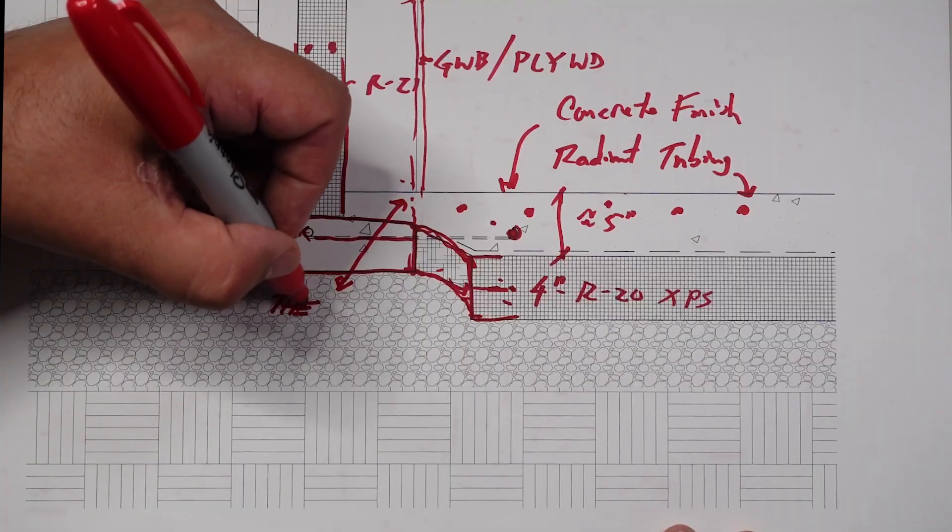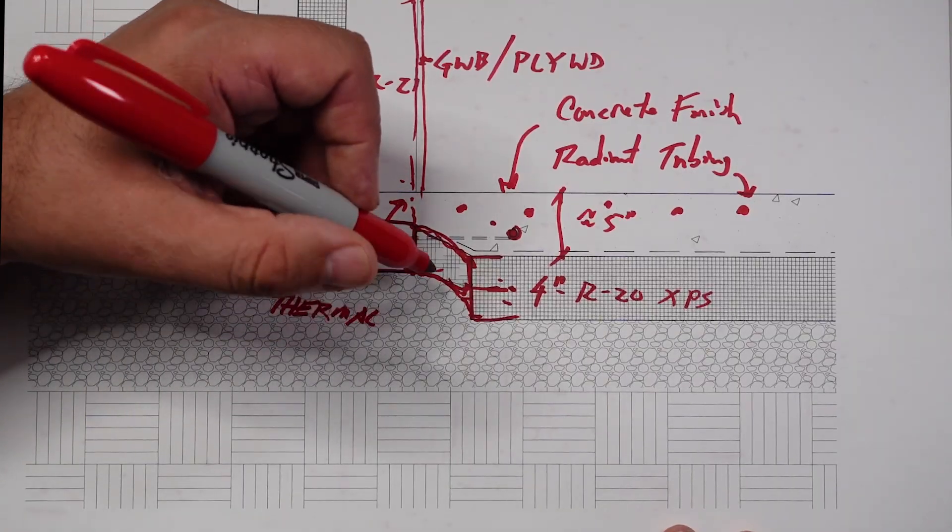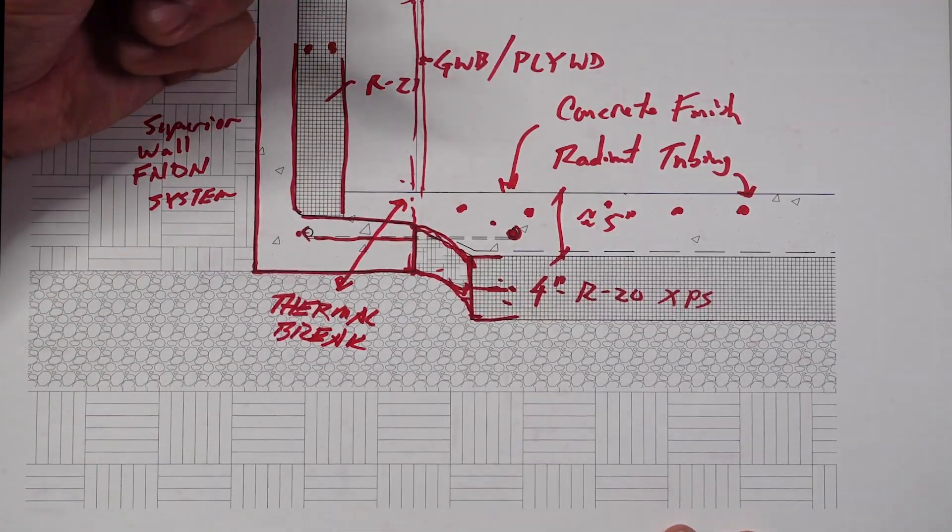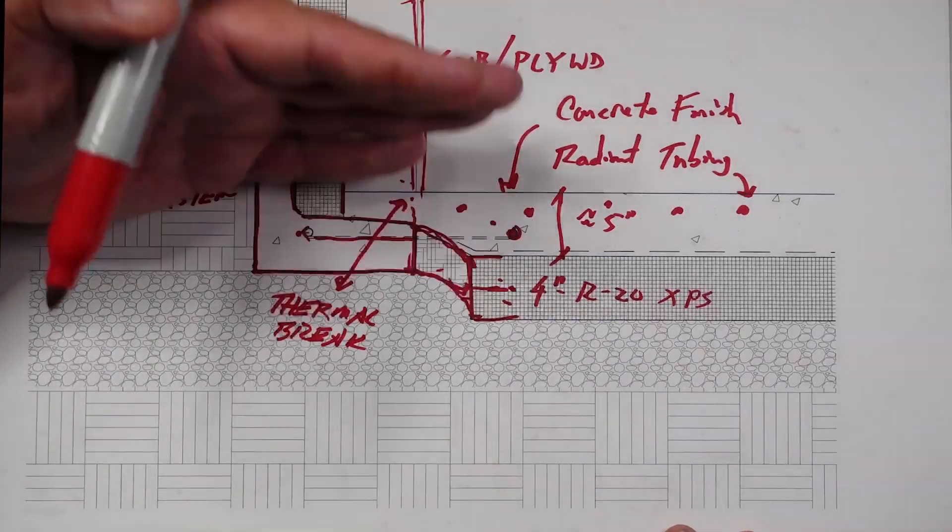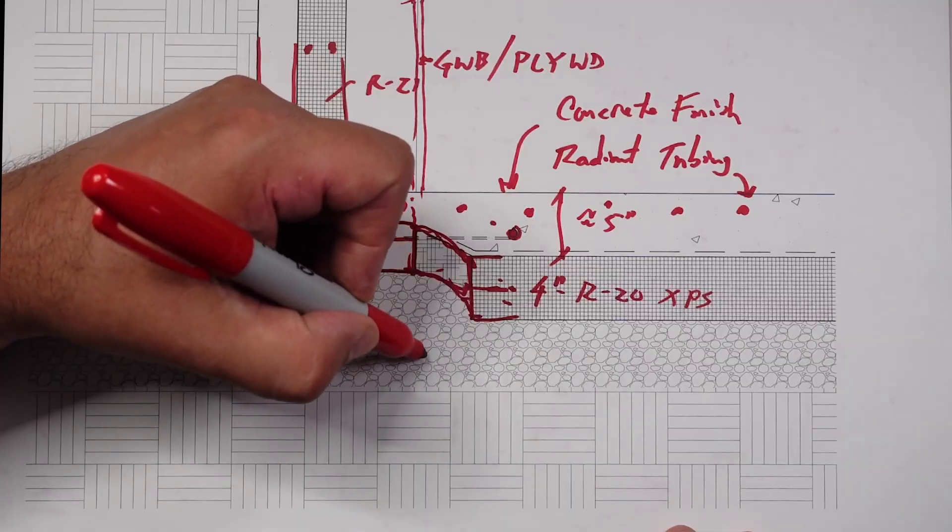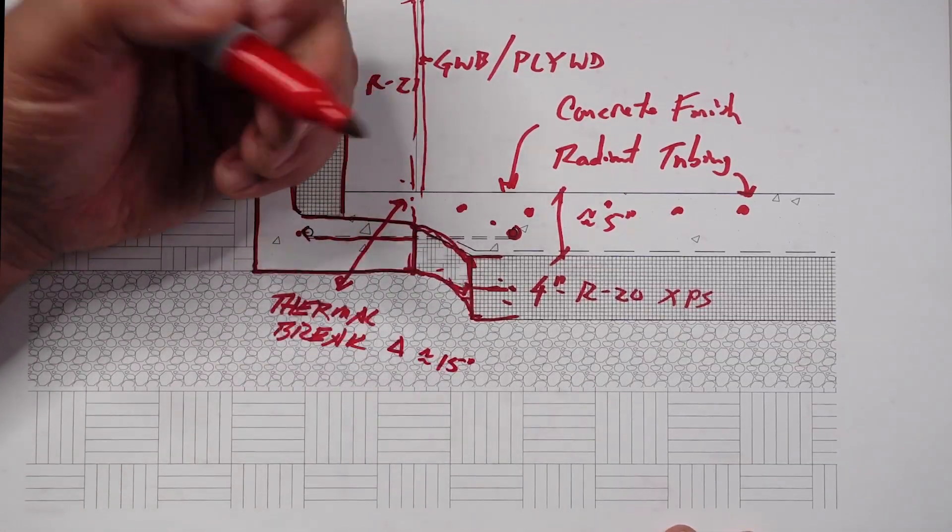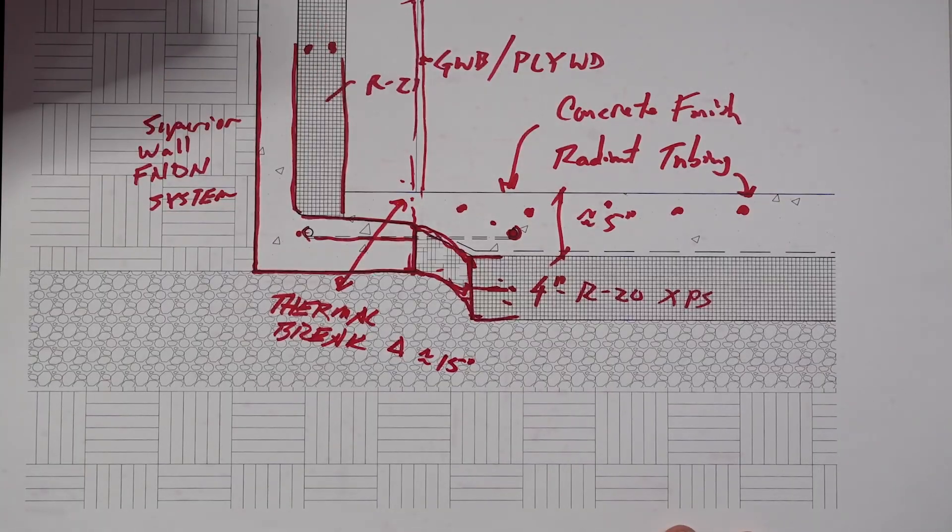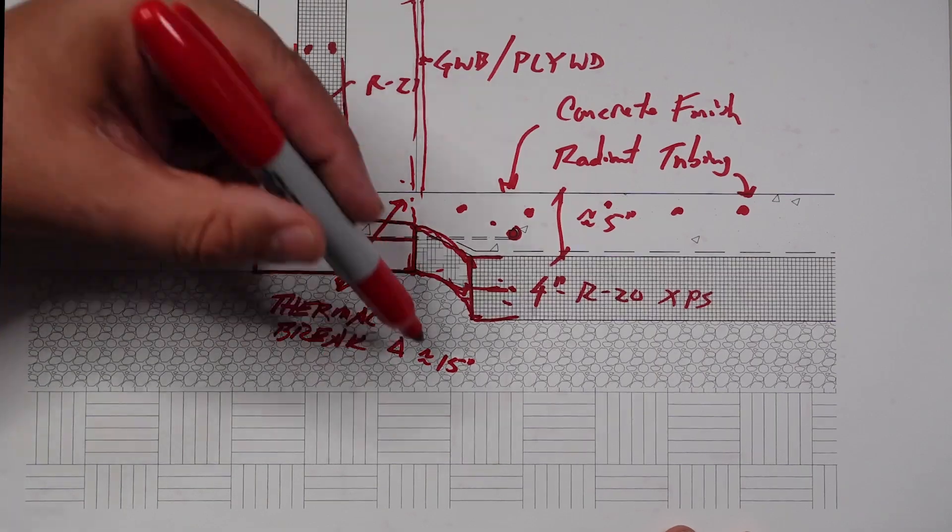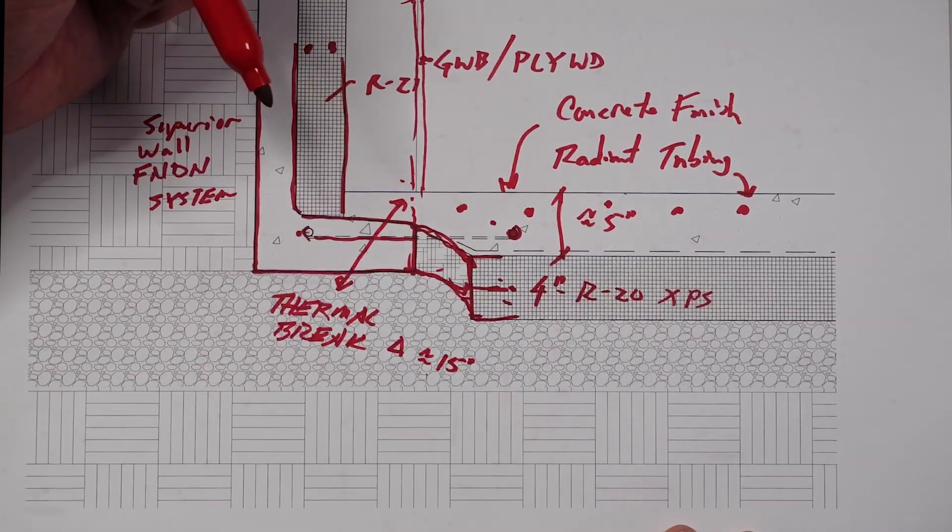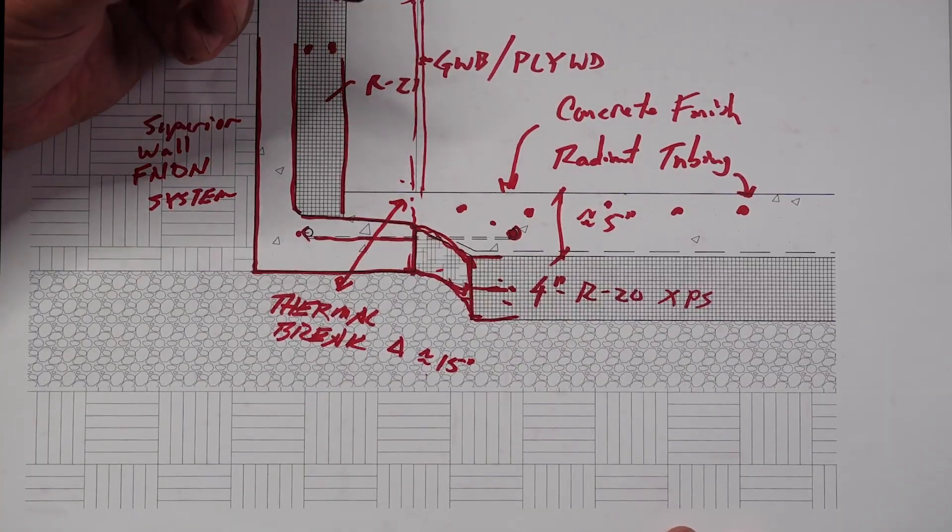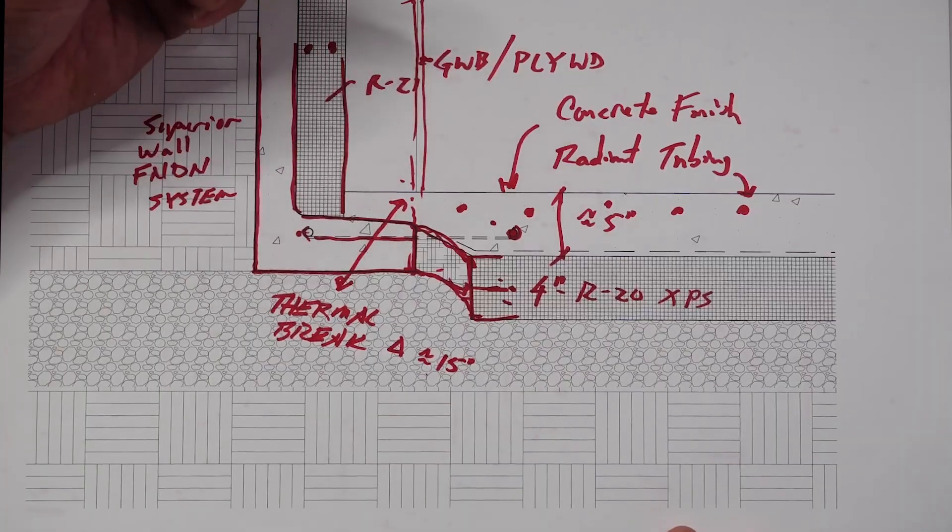I will confess that our continuity is not 100%, but I will make the argument that if I have to do a thermal break, doing it down 10 feet in the ground, the delta across here is probably somewhere around 15 degrees. So it's not like the top of the wall where that delta might be 70 inside and zero degrees outside, where it's five times that number.